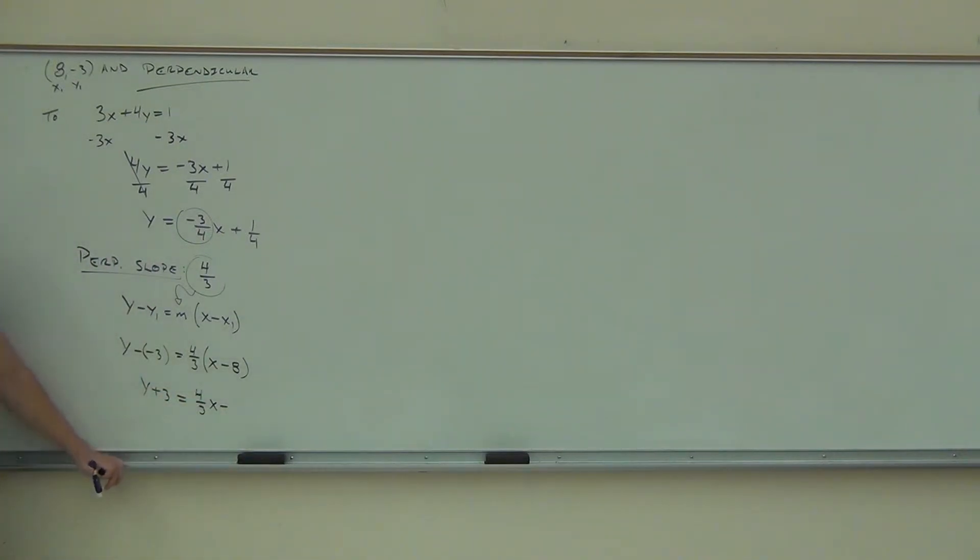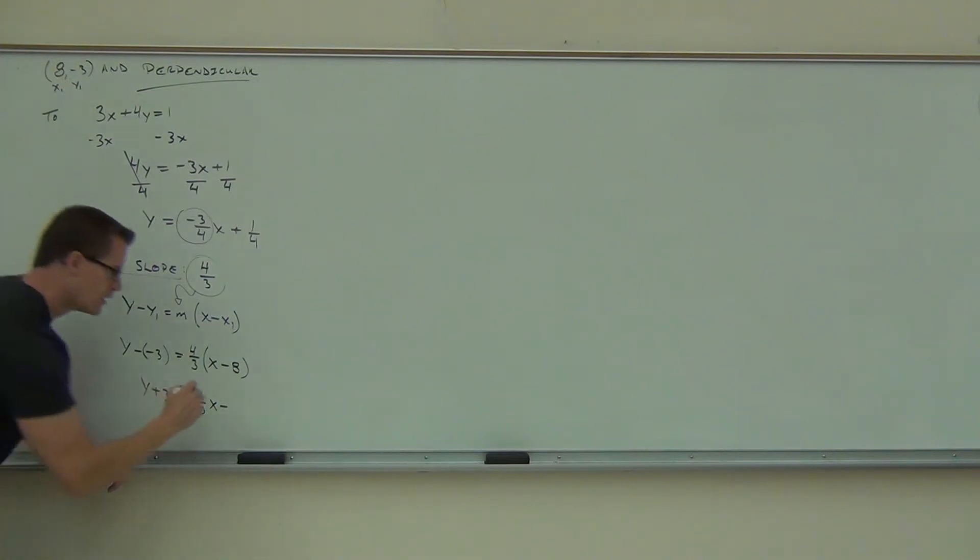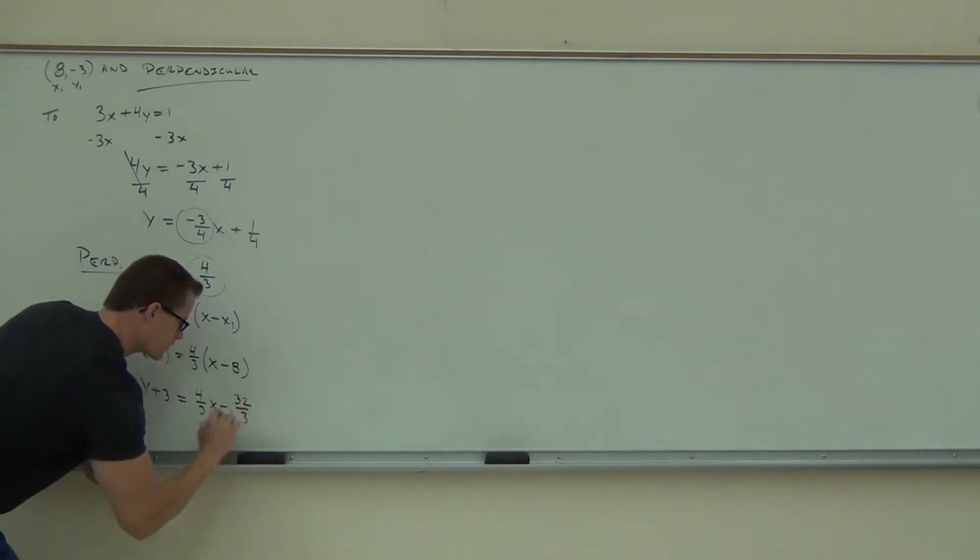Then we'll have minus—oh, that fraction doesn't reduce. That's going to be thirty-two over three. Do you see how I'm getting thirty-two over three? Good, you have four-thirds times eight over one. Thirty-two over three, my goodness.